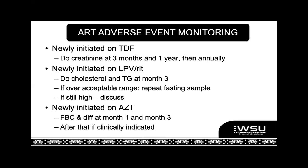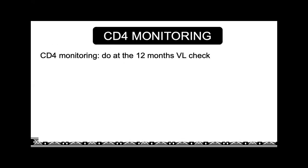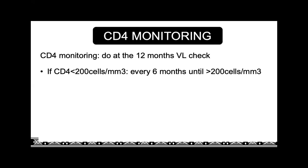For CD4 monitoring — people don't always know this — when you have a baseline CD4 under 200 that's under 12 months old, you're obviously going to put your patient on Bactrim. You need to make sure the CD4 count is over 200 so you can stop the Bactrim. The labs gatekeep CD4s at six months, so you can't do a CD4 less than six months apart. If you've done a CD4 at baseline, you can't do one at the three-month visit. We don't want to bring patients back just for CD4s, so do your first CD4 check at the 12-month viral load check. If the CD4 is still under 200 at the 12-month check, check the CD4 every six months until it's over 200, and then you can stop your Bactrim.